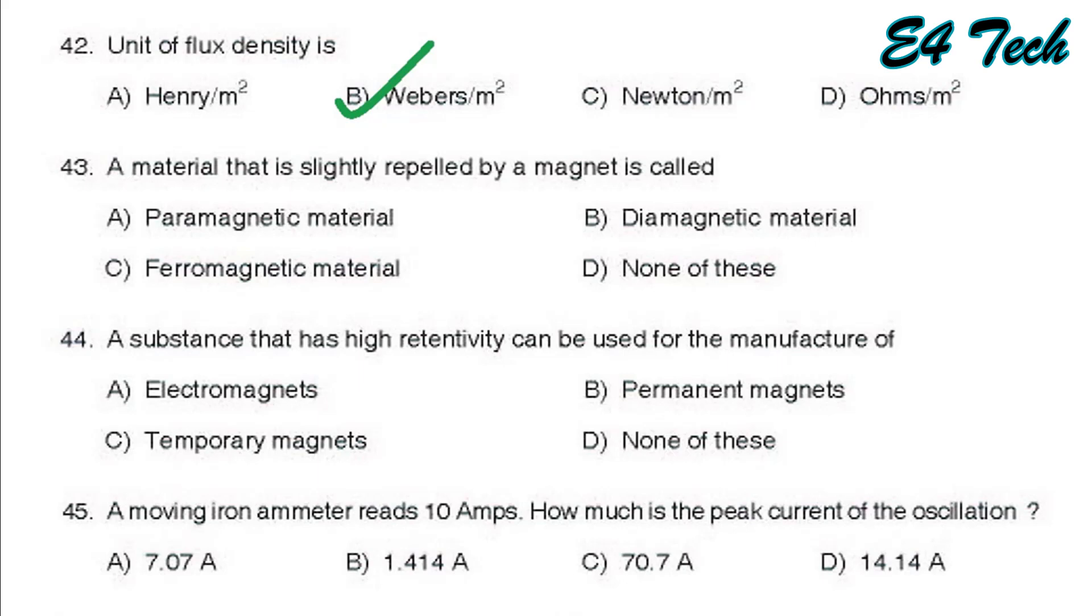A substance that has high retentivity can be used for the manufacture of electromagnet, permanent magnet, temporary magnets, none of these. High retentivity material can be used for the manufacture of permanent magnets, option B.